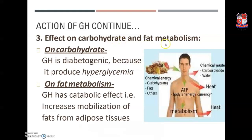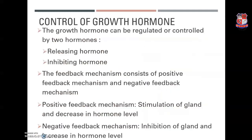On carbohydrate and fat metabolism: growth hormone acts as diabetogenic because it produces hyperglycemia — increased glucose levels in the body. On fat metabolism, it has a catabolic effect, causing increased mobilization of fats from adipose tissue. Now, how is growth hormone regulated? The hypothalamus has the ability to secrete two basic hormones: the releasing hormone and the inhibitory hormone, which control the growth hormone.